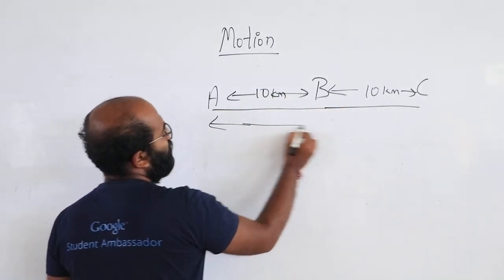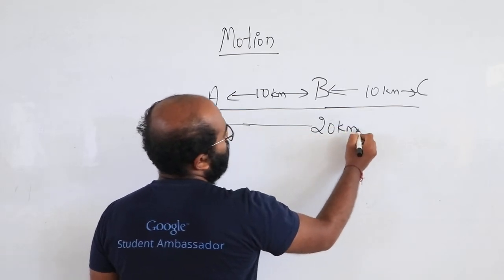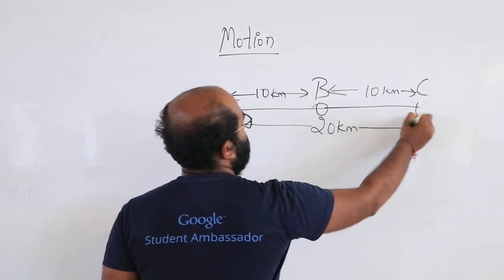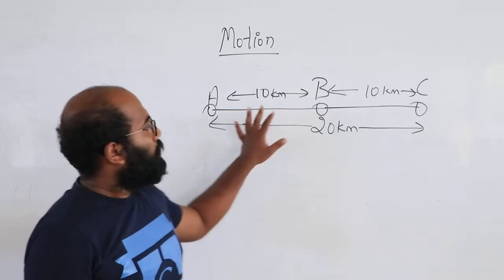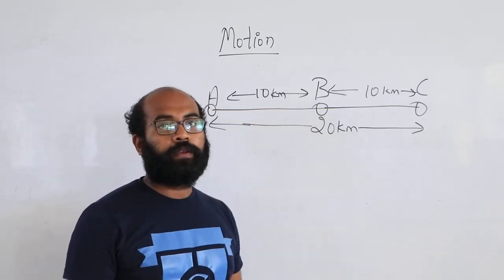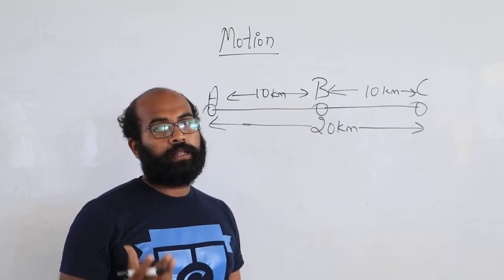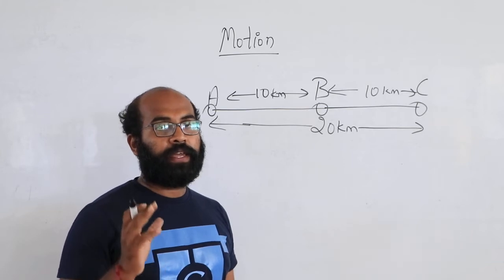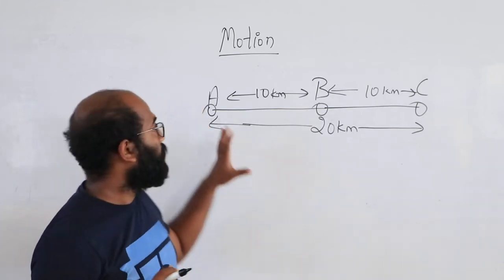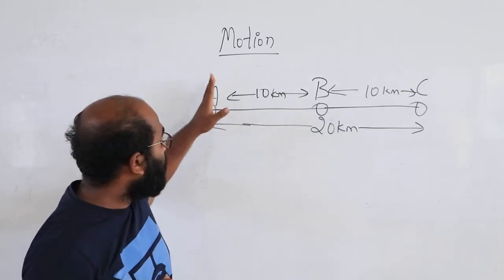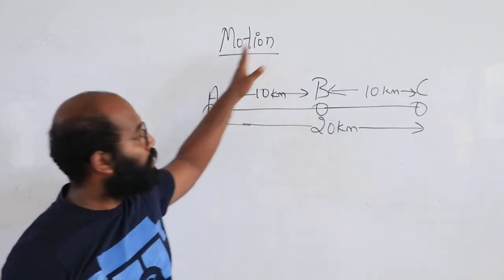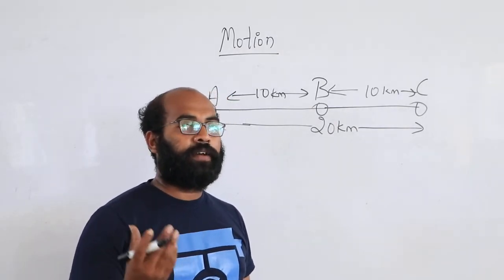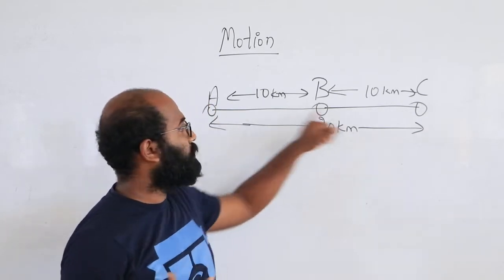So the distance between A and C will be 20 kilometers — that is what distance means. Now let's take the concept of displacement. What is displacement? Be careful: when I say that I travel from A to C, the distance I travel is 20 kilometers because the distance from A to C is 20 kilometers.